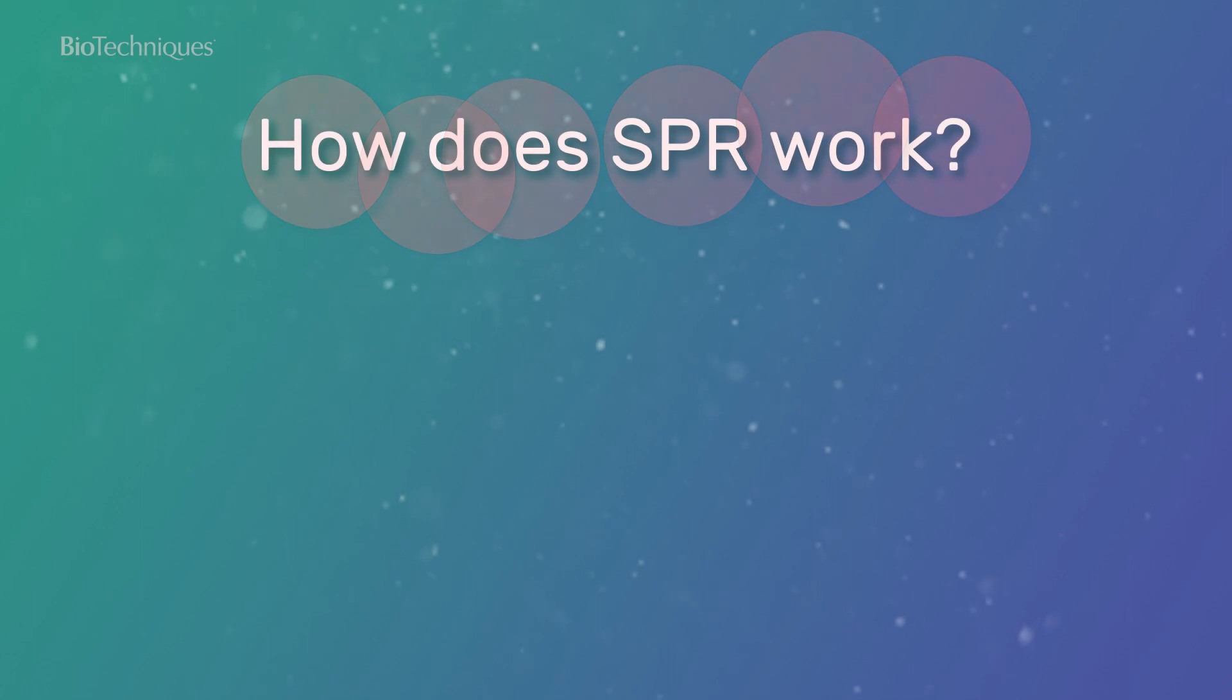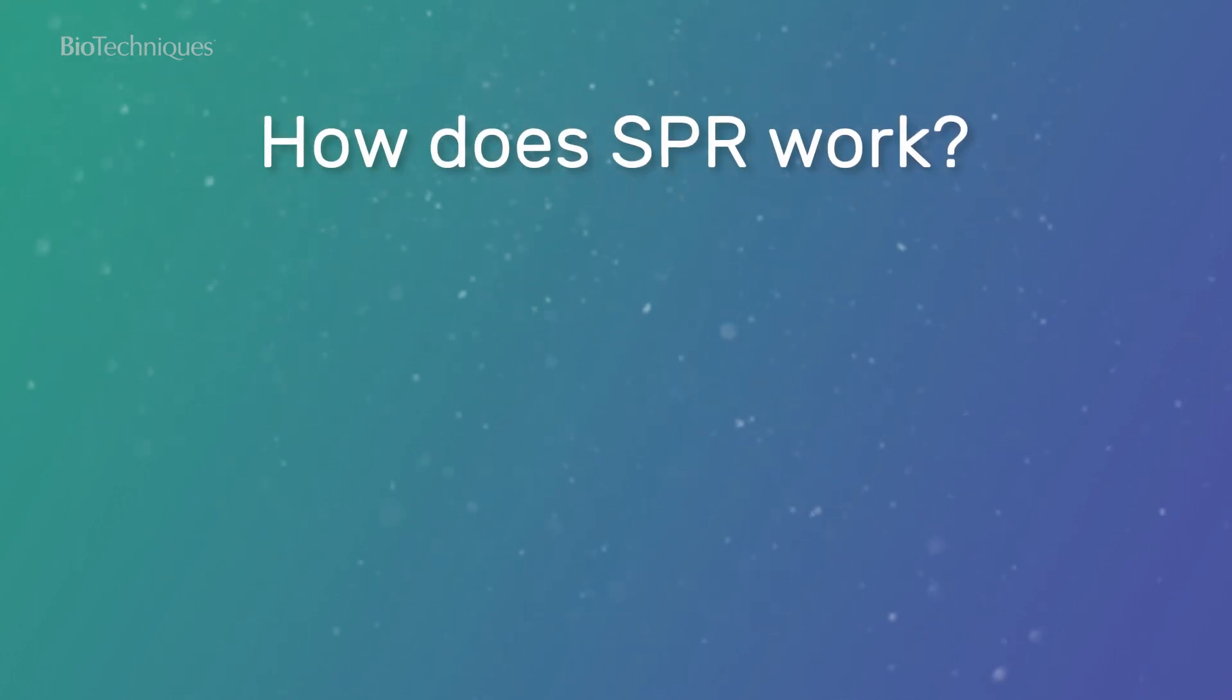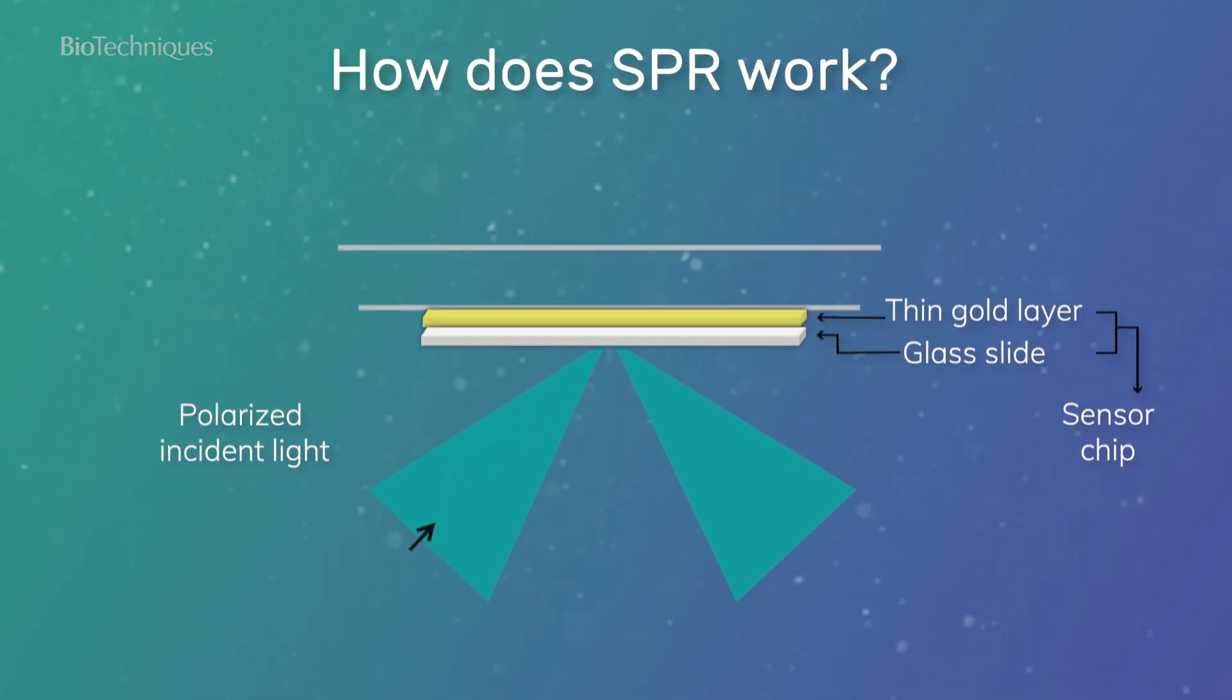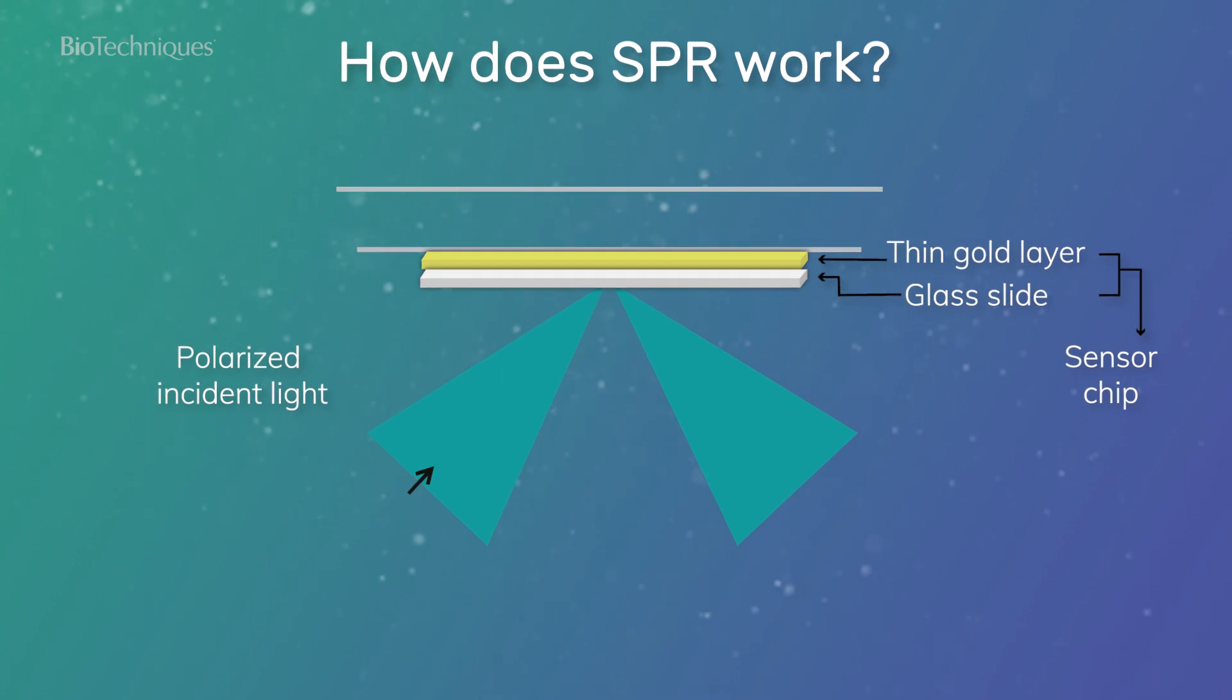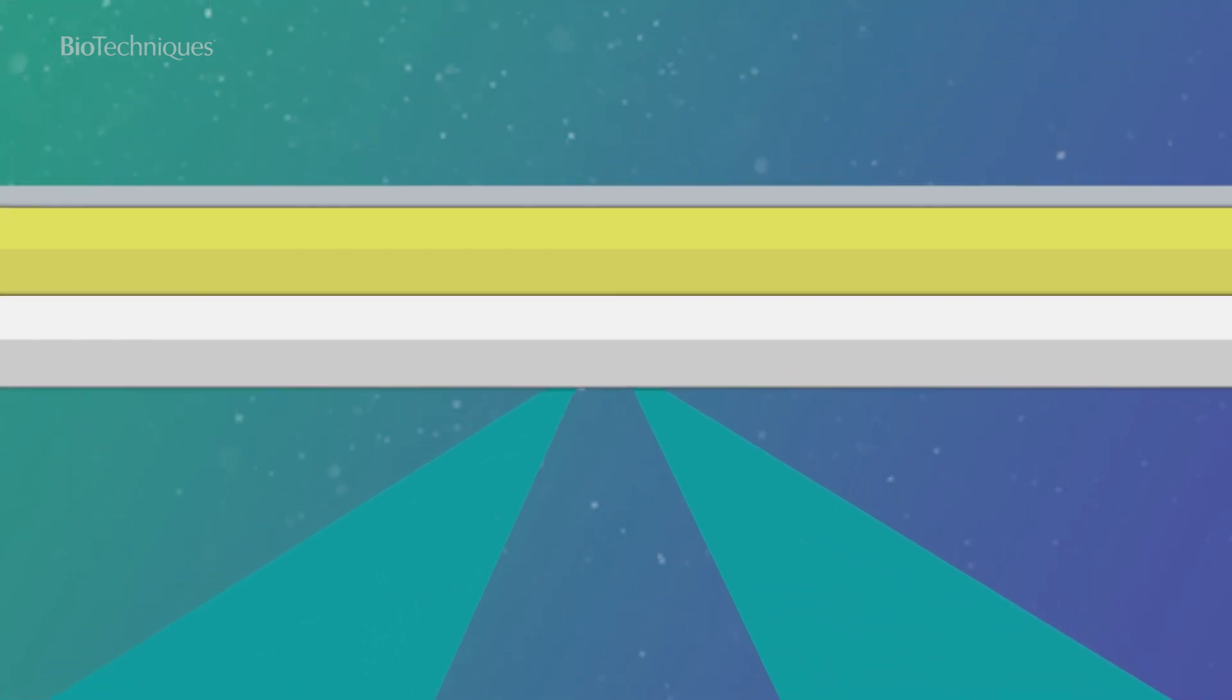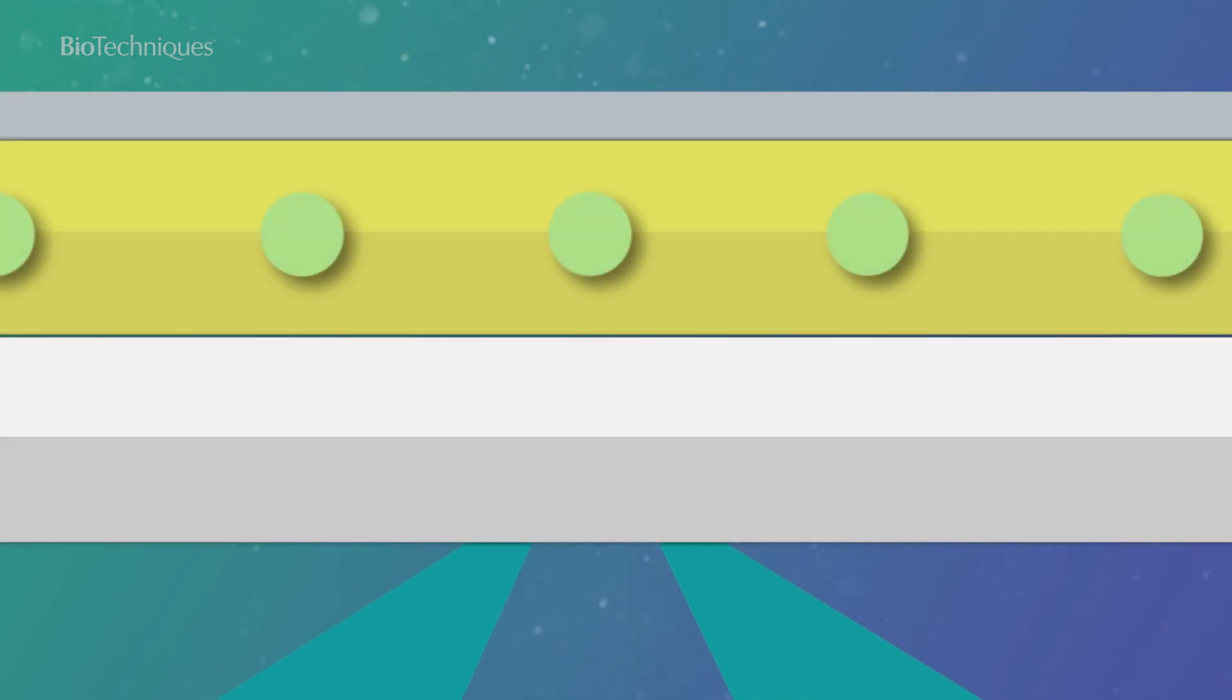But how does this phenomenon work, and what are its applications? SPR occurs under conditions of total internal reflection when incident light is reflected off a glass sensor chip coated with a thin gold film. The presence of free electrons at the interface between gold and glass is required to generate surface plasmons.